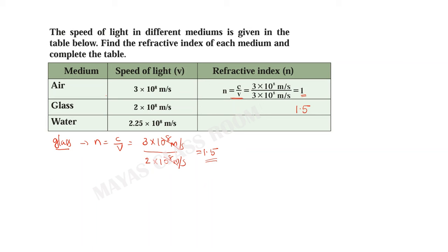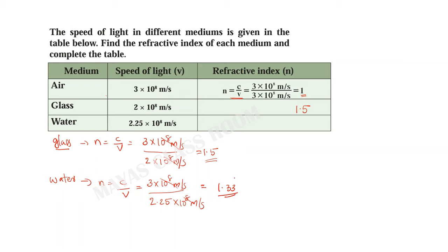For water, the equation is N is equal to C by V. If we put in the values: C is equal to 3 into 10 raised to 8 meters per second and V is equal to 2.25 into 10 raised to 8 meters per second. If you divide, you get 3 divided by 2.25, which gives 1.338. The refractive index of glass looks like 1.53 and water is 1.33.